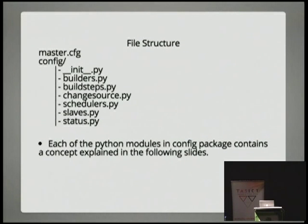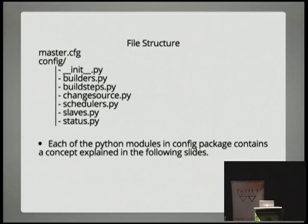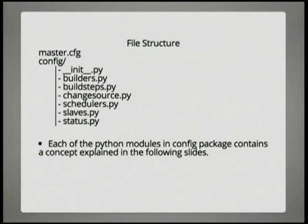This is the file structure I set up. I like having things in separate files — separate concepts in separate modules. It makes it a lot clearer. Some of these are literally like two or three lines long. This whole structure is on that GitHub repo and it's fully filled out so you can use it, extend it, and build on it. The builders, build steps, change source, schedulers, slaves, and status all map to those foundational concepts I was talking about. As we go through, I'm just going to explain what each of those are and then put it all together at the end.